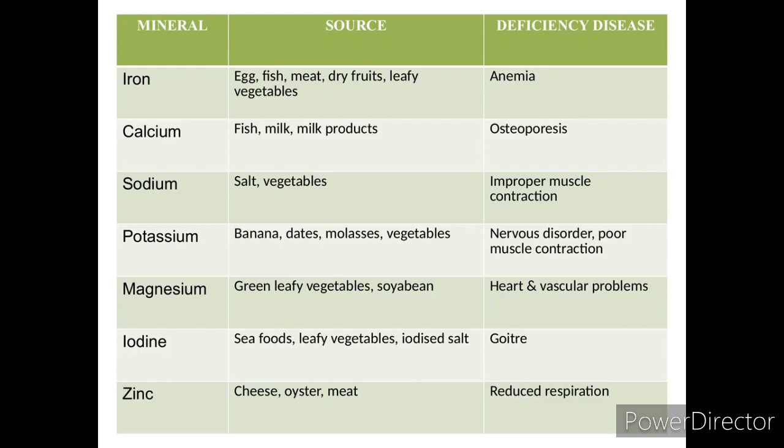Iodine is rich in seafood, leafy vegetables, and iodized salt. Iodine deficiency causes goiter. The next mineral is zinc; major sources include cheese, oyster, and meat. Zinc deficiency causes reduced respiration.